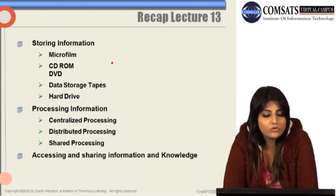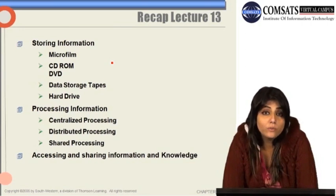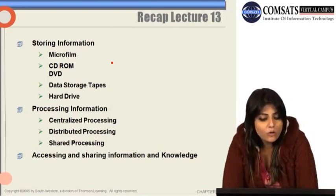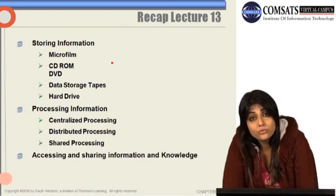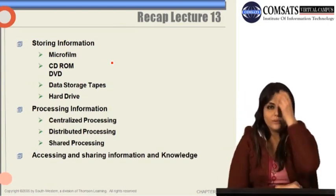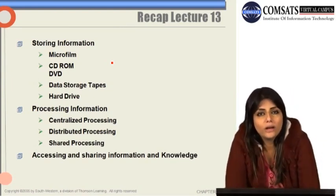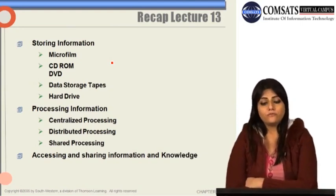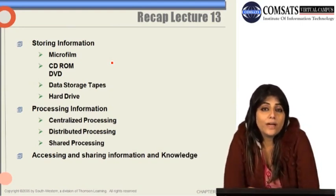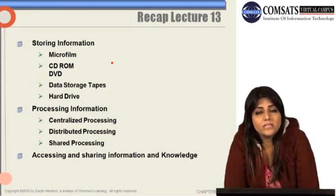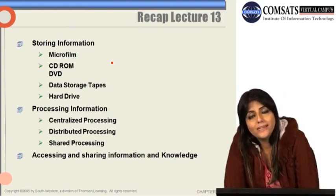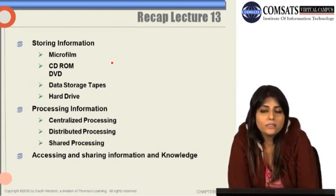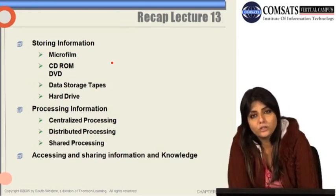Electronic ways of storing information include microfilm, CD-ROM, DVD, and other options. We discussed storage tapes — primarily used when secondary data managers need to archive data. We also discussed hard drives, which are the fastest source for retrieval of information, which is why managers normally keep primary data in hard drives since it is easily and quickly accessible. We discussed the advantages and disadvantages of these different storage devices.